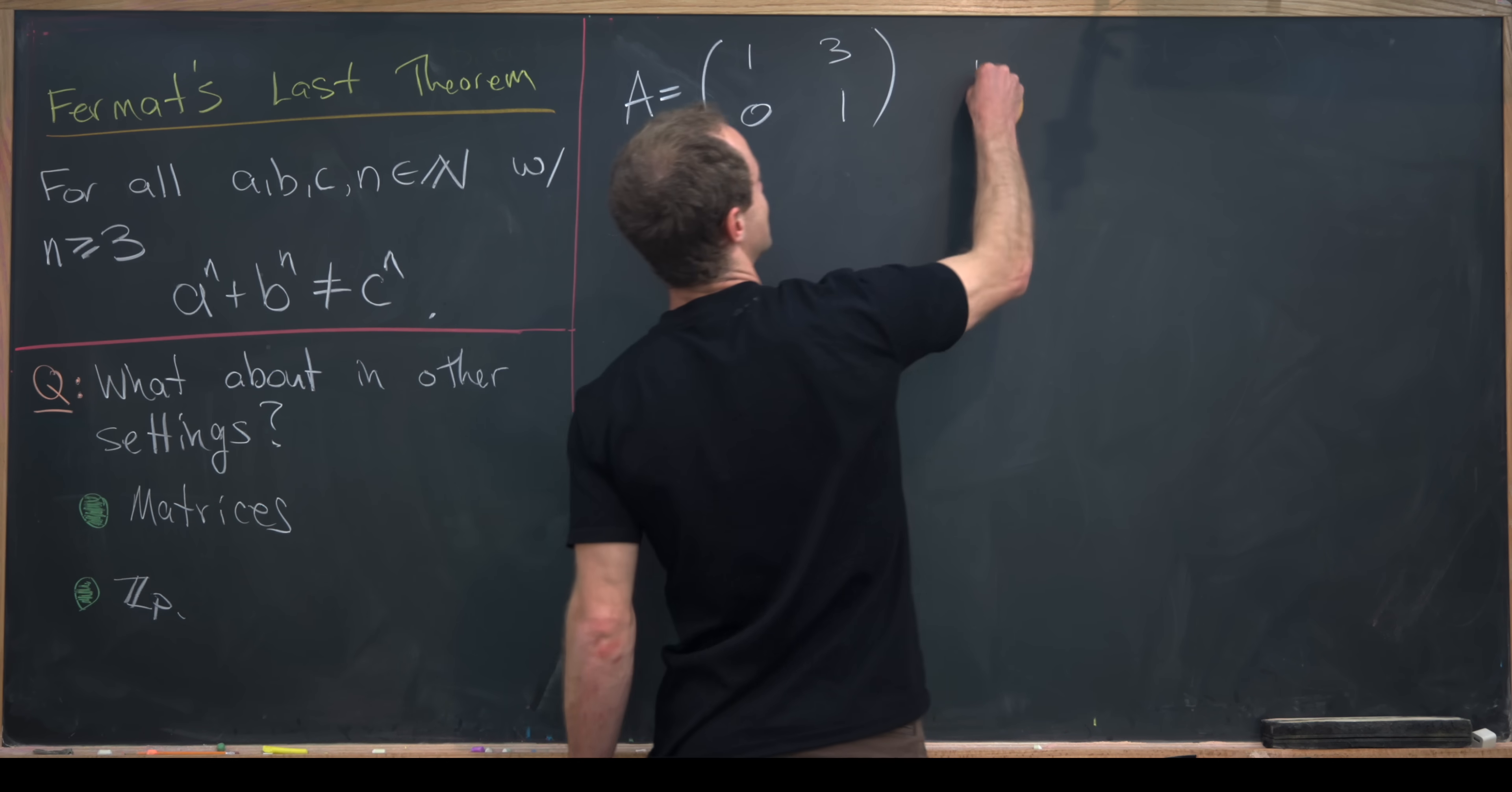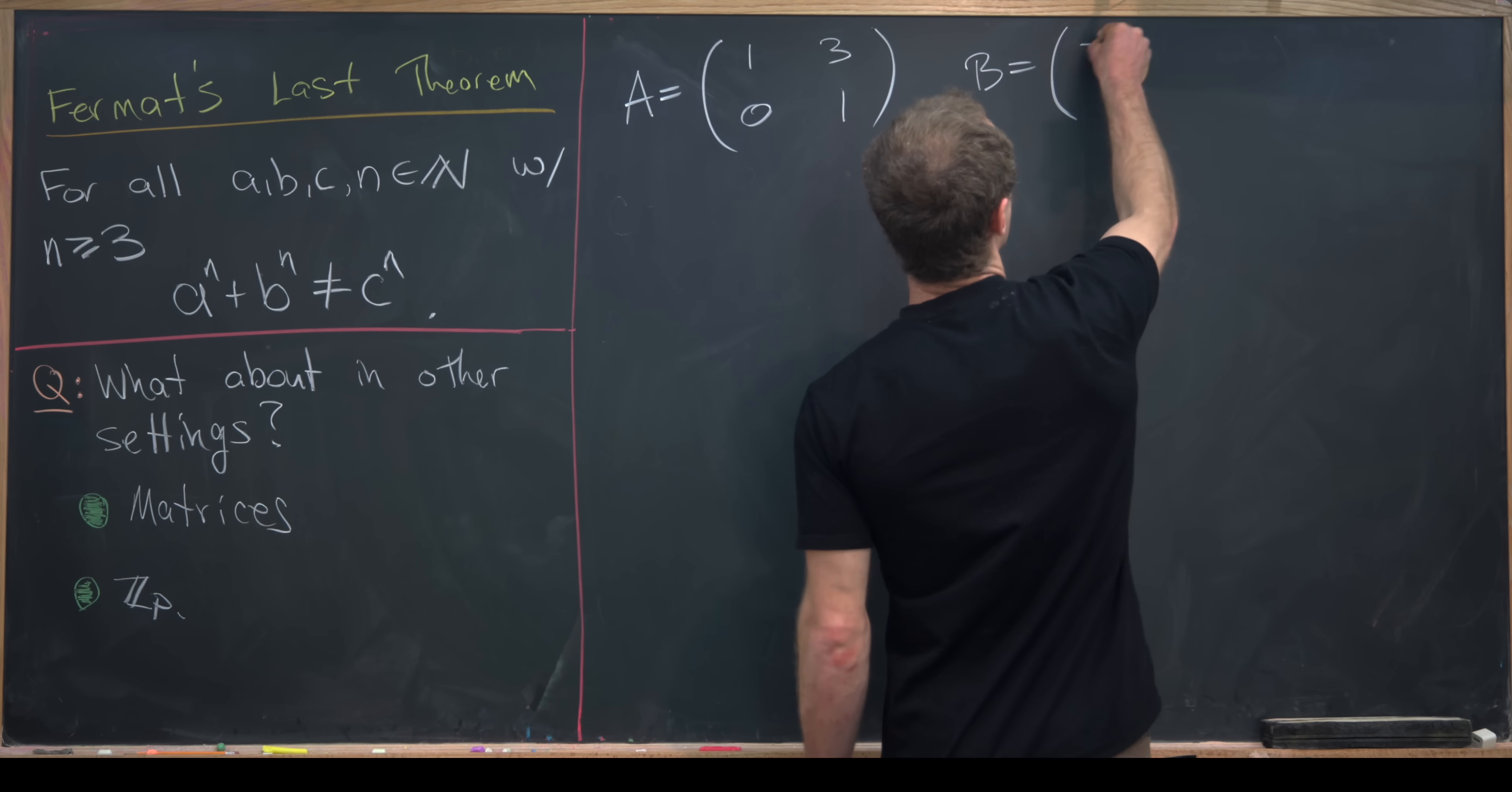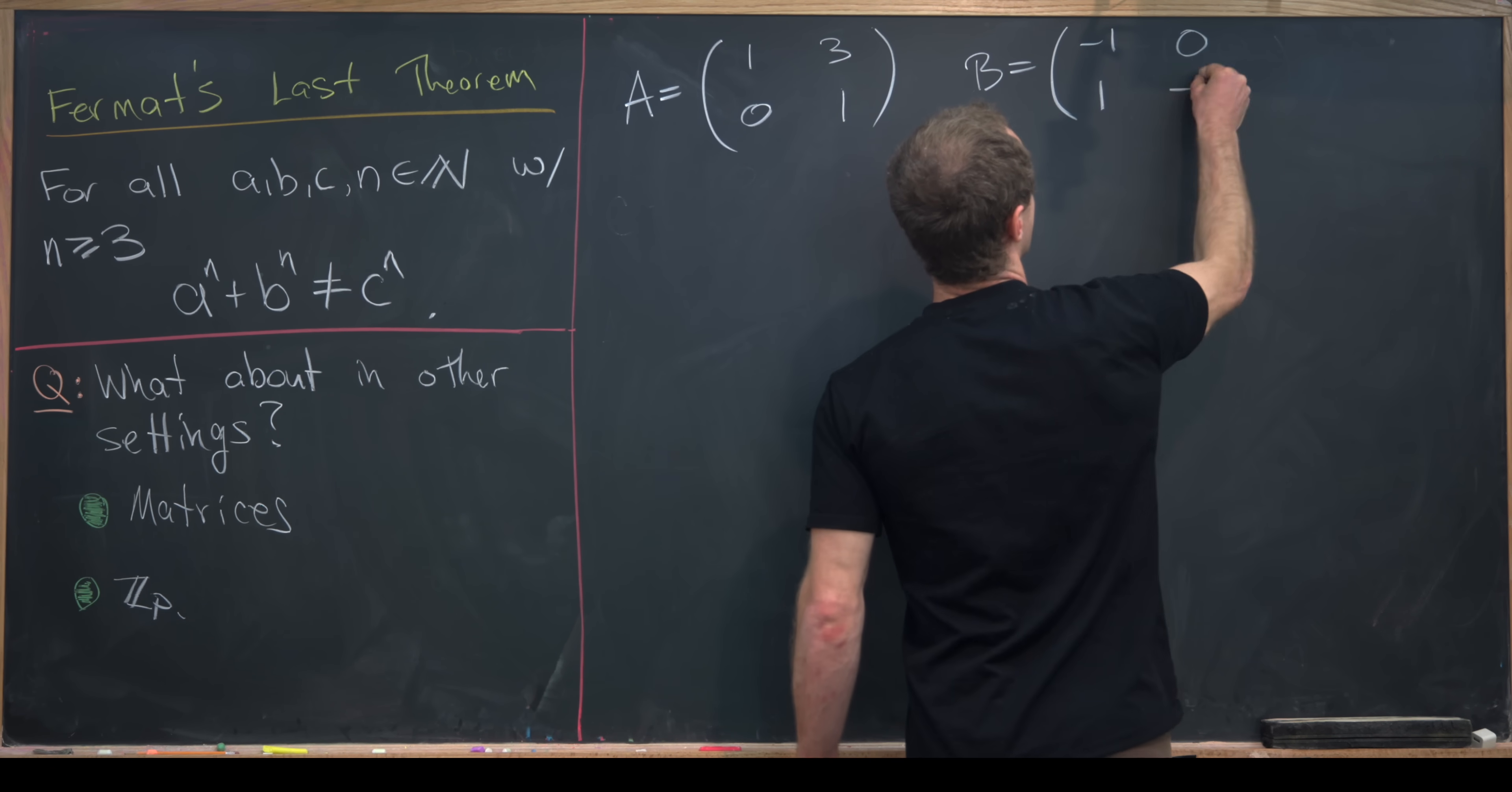And then we'll also need a matrix capital B. So I'll define that as negative 1, 0, 1, negative 1.